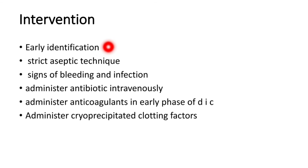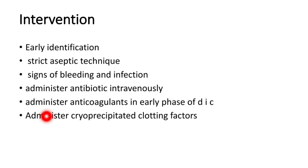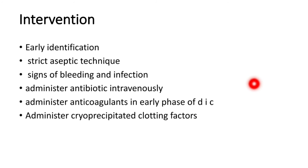Interventions for DIC: early identification — identify if the patient is having any symptoms related to infection like fever or body ache. Strict aseptic technique must be maintained during invasive procedures for cancer patients. Monitor for signs of bleeding and infection. Administer antibiotics intravenously to prevent and treat bacterial infection. Administer anticoagulants in the early phase of DIC, as organisms can cause coagulation in the vascular system. Cryo-precipitated clotting factors can also be administered.